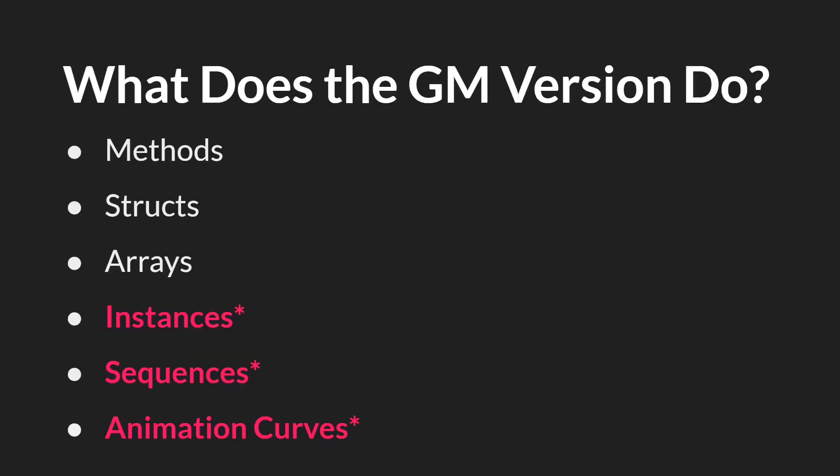So what does turning the garbage collector off actually do, or what won't be collected if it's off? If you turn it off, the garbage collector will no longer clean up methods, structs, arrays, instances, sequences, or animation curves. Instances, sequences, and animation curves are highlighted because there's something special about them. With methods, structs, and arrays, there's really no way for you to manually delete them — GameMaker just handles these automatically. Now with structs, you do have the delete keyword, and there is a tutorial on that linked above. But in general, there isn't a way to actually destroy a method, a struct, or an array. However, instances, sequences, and animation curves have to be destroyed before GameMaker will garbage collect them. Non-persistent instances will be destroyed automatically on room change. Sequences made inside the IDE will also be destroyed on room change. And you don't really need to destroy animation curves made in the room editor, but sequences and animation curves created through code do need to be destroyed in order for the garbage collector to collect them.